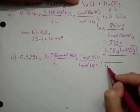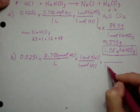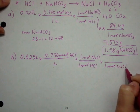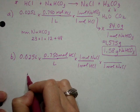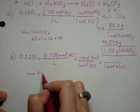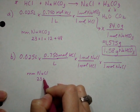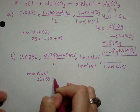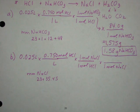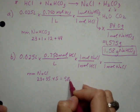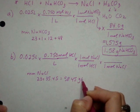And then finally, we want grams again, so I need molar mass. And then molar mass of NaCl is 23 plus 35.45. Gives me 58.45 grams per mole.